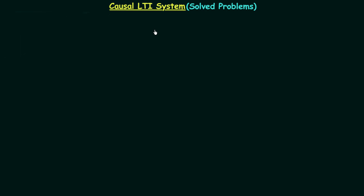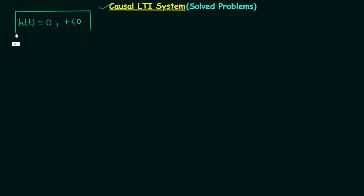In the last lecture we had a detailed discussion on causal LTI systems and obtained one sufficient and necessary condition for an LTI system to be causal. According to this condition, the impulse response h(t) of an LTI system should be equal to 0 when t is less than 0. Whenever the given LTI system follows this condition we call it a causal LTI system, and whenever it does not follow this condition we call it a non-causal LTI system.